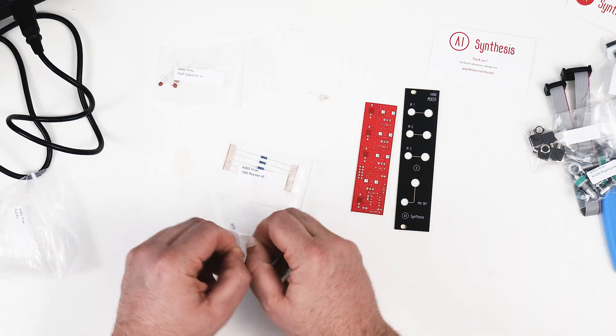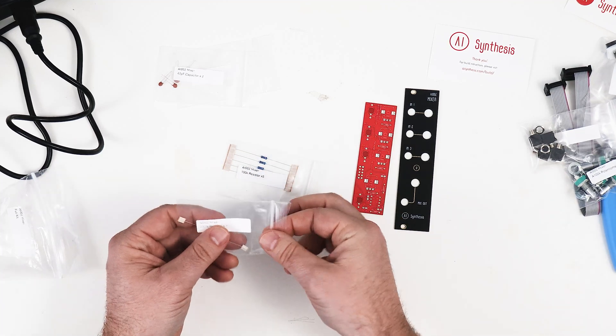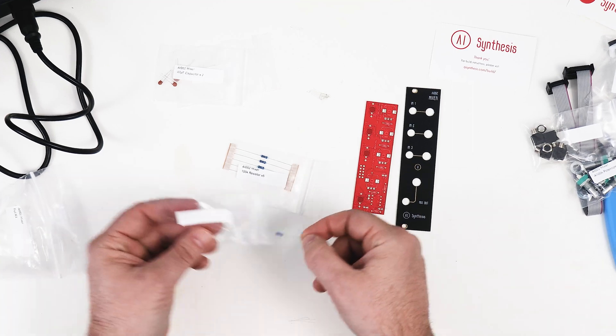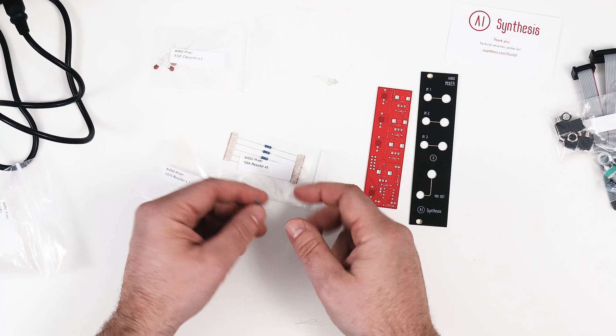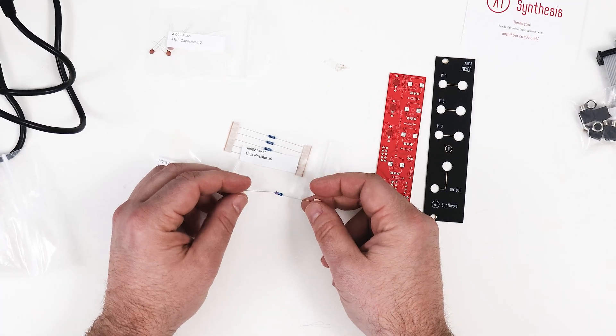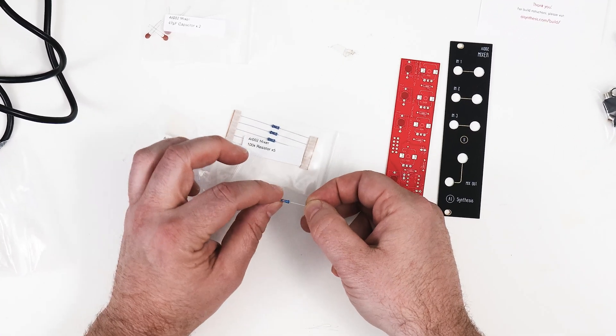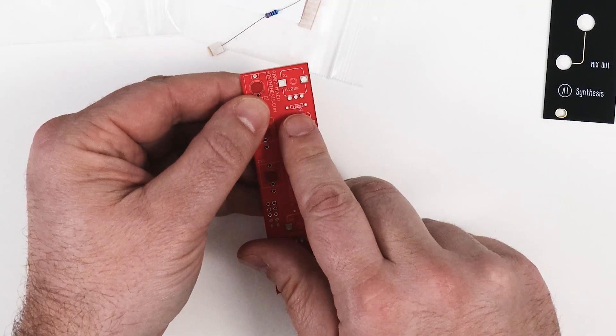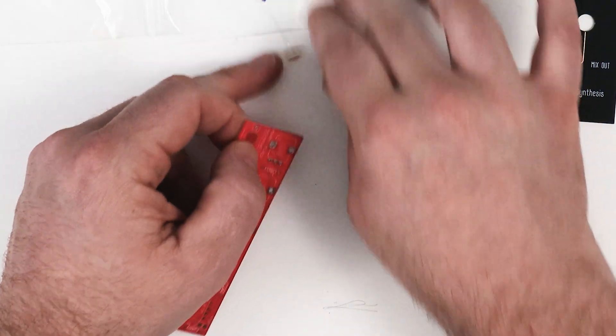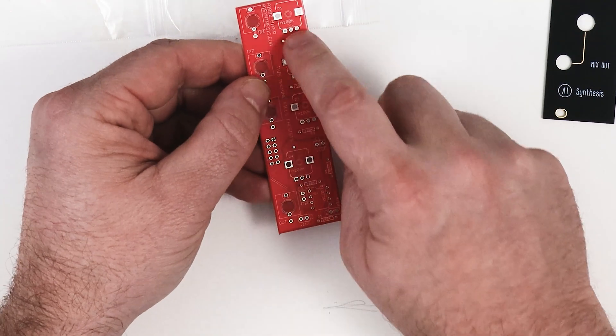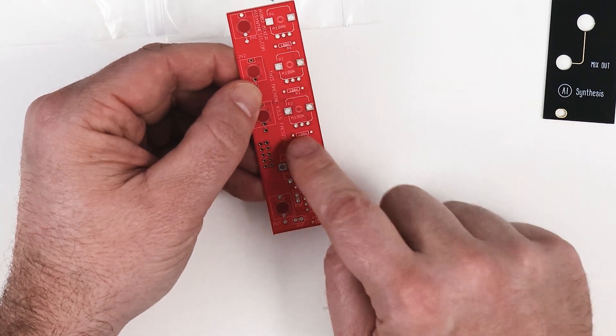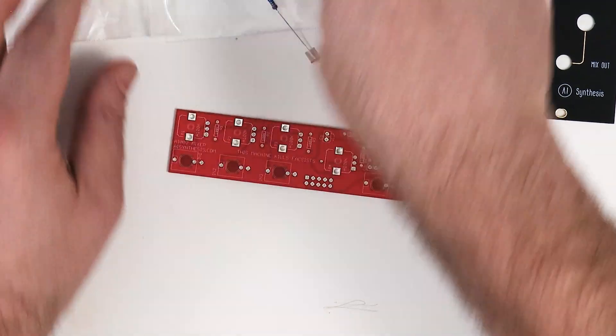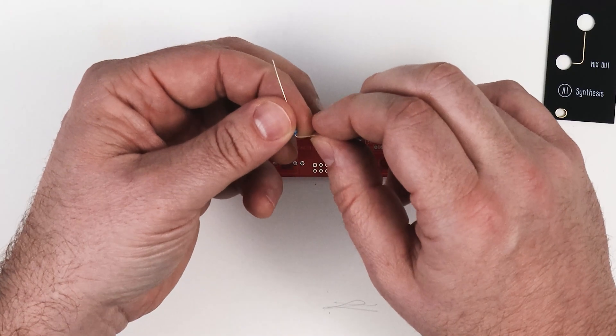The first step were the resistors. Now in the build video on the website it was done with an older batch of these modules and apparently there was an issue with the printing, but they've resolved that because this was clearly printed.